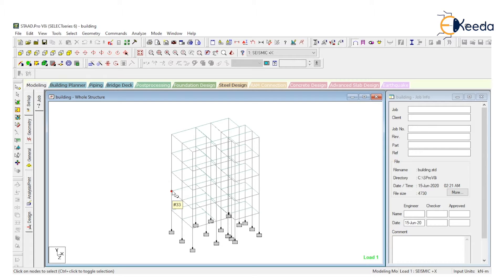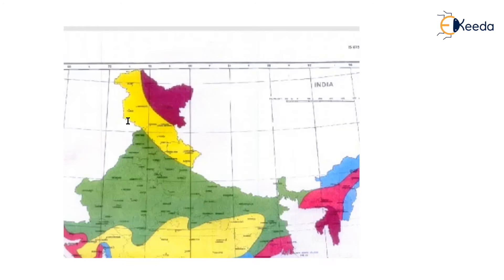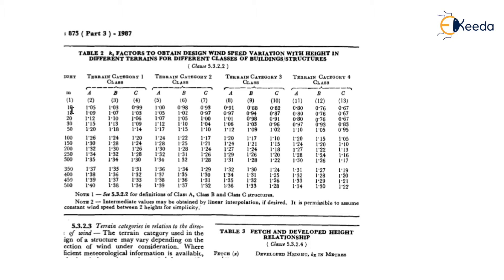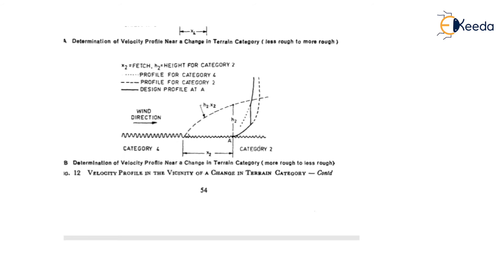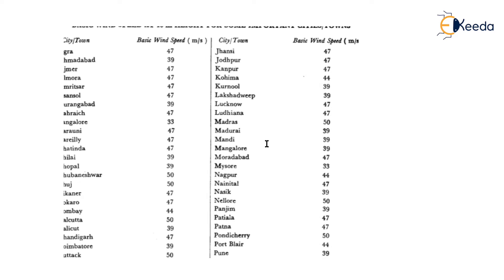Now look at the example. We have a building of 15-meter height. The table data is available at 10, 15, 20, 30, 50 meters. For heights less than 10 meters, we do not calculate a separate wind speed — just use the value for 10-meter height. If your building height is 9 or 8 meters, just calculate for 10 meters. The basic wind speed is also given for 10-meter height for some important cities.